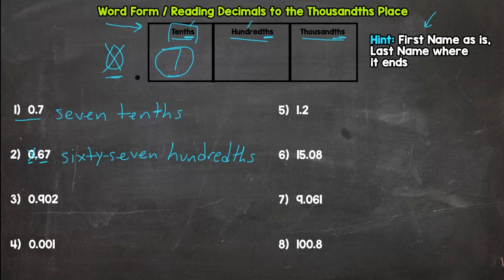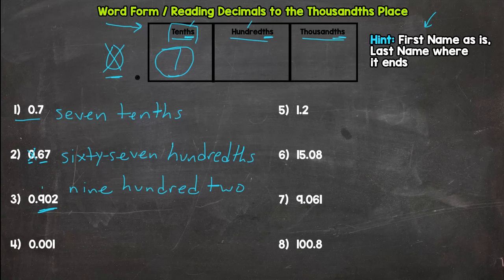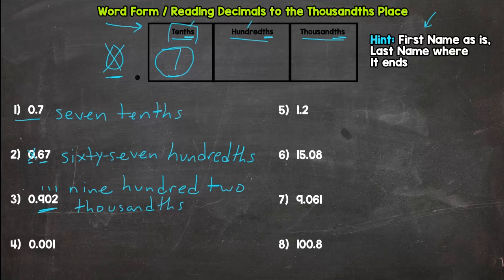Number three: read as is — you should have thought of nine hundred two. Now for the last name, where does it end? Tenths, hundredths — it ends in the thousandths. So the answer is nine hundred two thousandths.